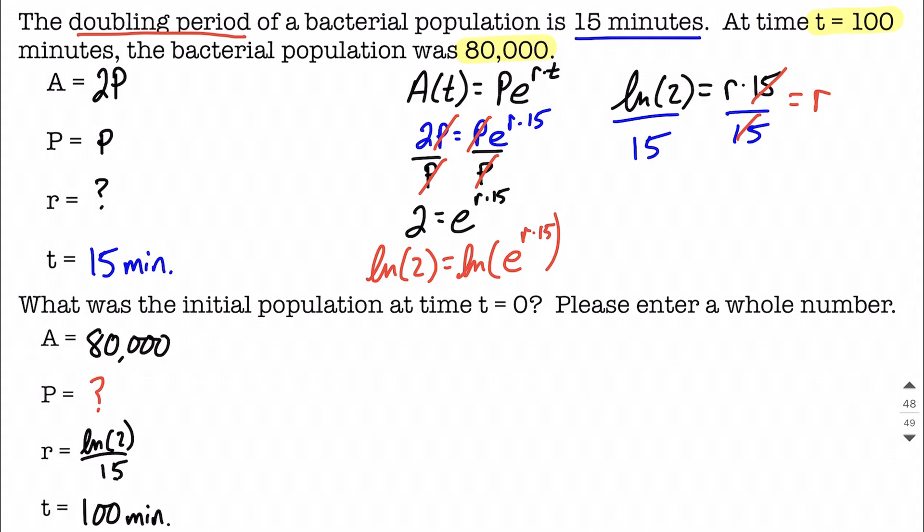Same formula we're plugging into, so we say 80,000 equals p we don't know, then we're going to go e raised to the natural log of 2 divided by 15 times our time 100. And I'm not getting a decimal approximation for that rate, because we really want to get a nice exact answer whenever possible. The easiest way to do that is just keep it as natural log of 2 divided by 15 up there.